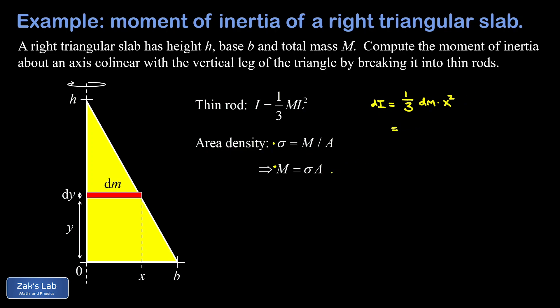Next we can replace dm with its mass calculated as sigma times area. So I have one third times sigma, my area density, times the area of that thin rod. The area of the thin rod is just length times height, so that's going to be x times dy, and we can clean this up as one third sigma x cubed dy.